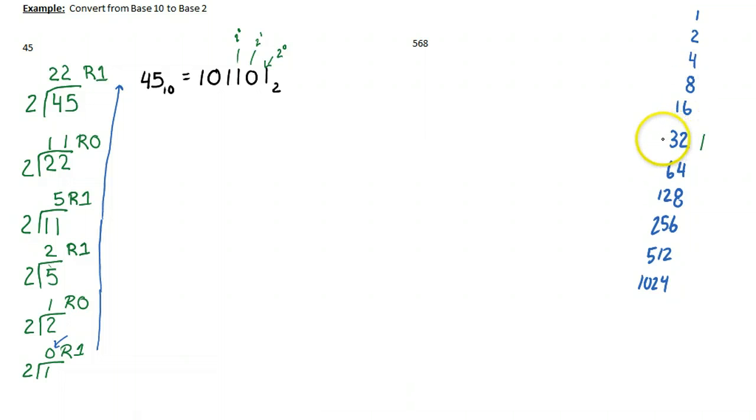So then I say to myself, okay, well, 32 plus 16. 32 plus 16 is actually bigger than 42. Sorry, 45. So I don't want that. So I'm going to switch that off.